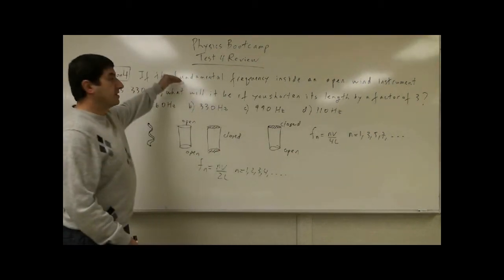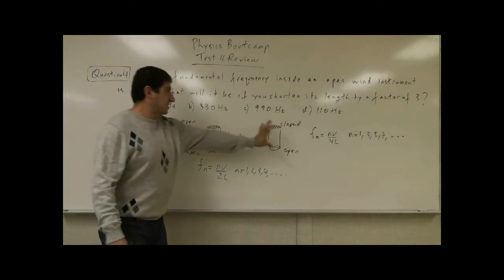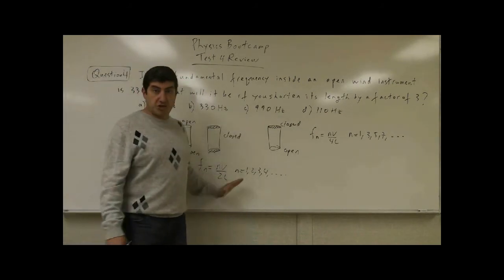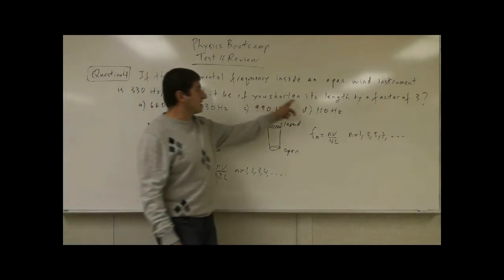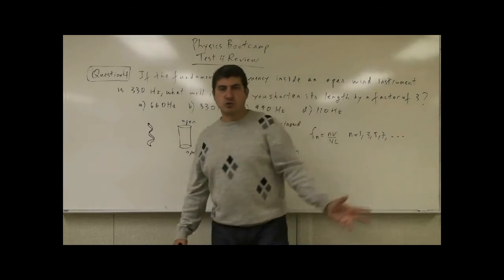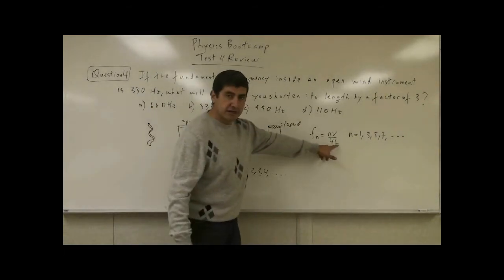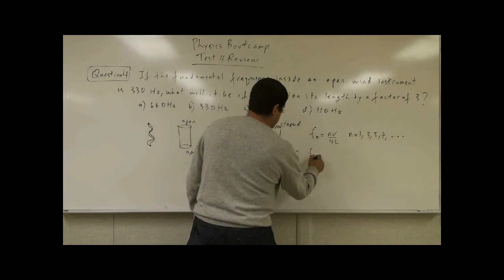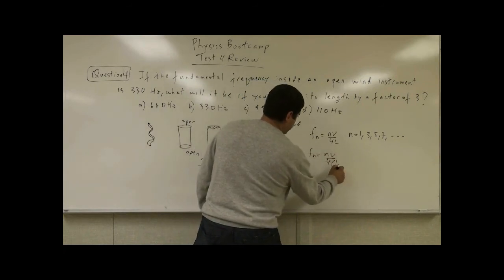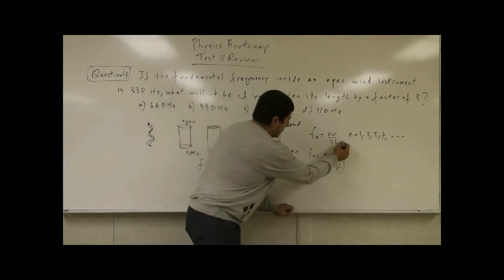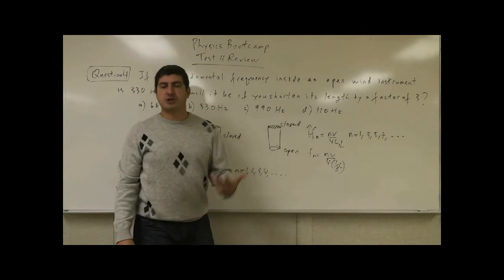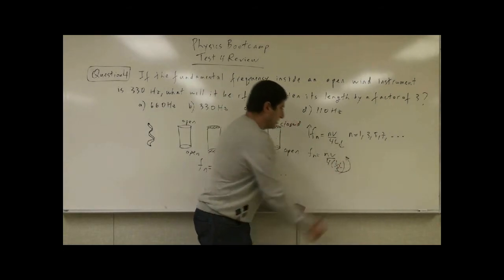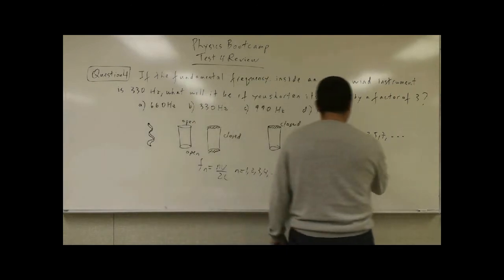For this problem, we don't even need to know which kind of pipe it is. As long as we know the fundamental frequency is 330 Hz, if you shorten the length by a factor of three, l becomes one-third l. The shorter the length, the bigger the frequency that resonates in that pipe. So l becoming one-third l means the three goes up to the numerator.